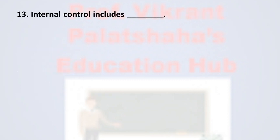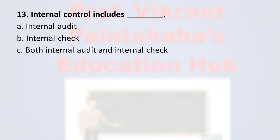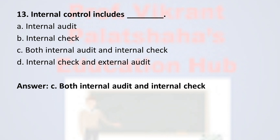Question number thirteen: internal control includes — option A internal audit, option B internal check, option C both internal audit and internal check, and option D internal check and external audit. The correct option is option C, both internal audit and internal check.